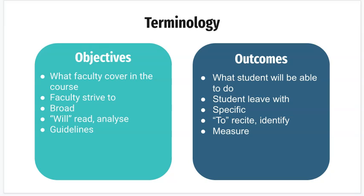Objectives are really about what the faculty is going to be covering in class. At a macro level, they're more of what faculty strive to do. I think of it as a presenter of content — if I'm doing a workshop, my objectives are what I as the designer or trainer will provide. Objectives are also usually very broad — for example, 'will read historical materials' — not necessarily specific. They're also sometimes seen as guidelines because they don't often have an ability to be truly measured. Objectives are more of what you will cover.